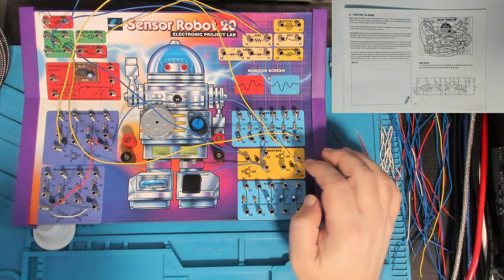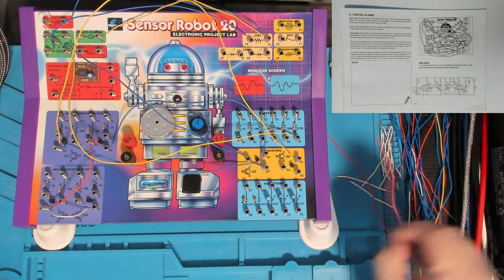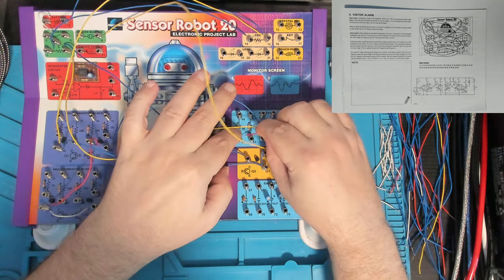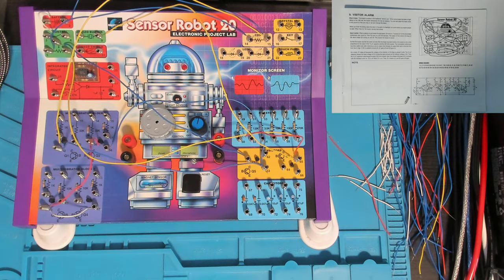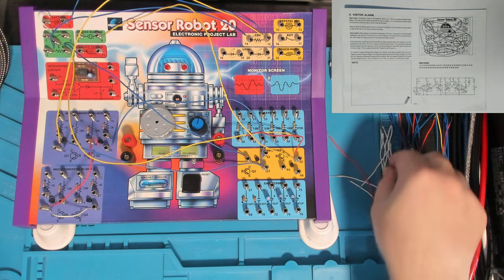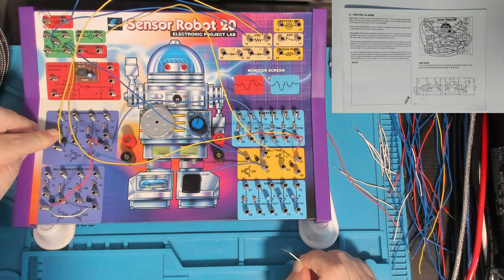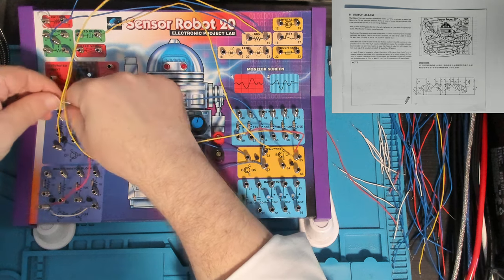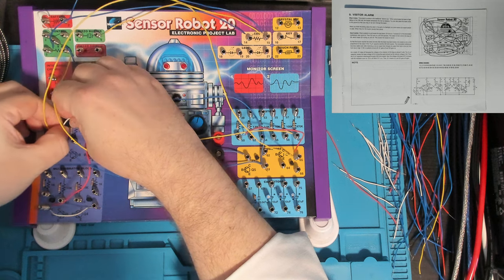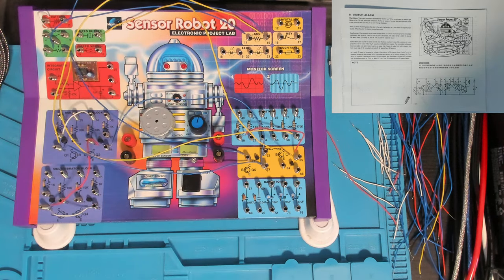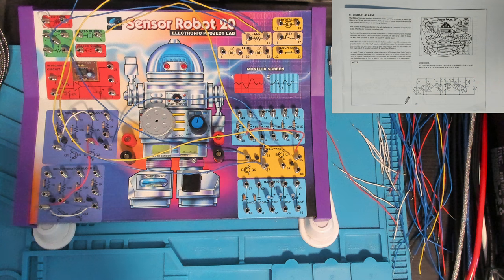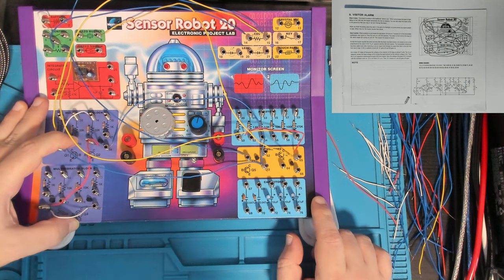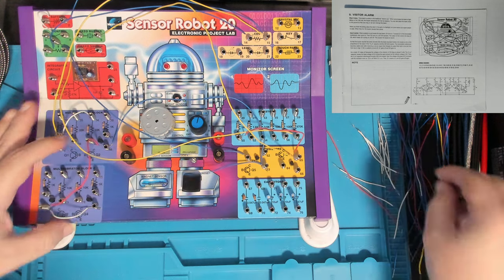Then we've got 65 to 50, just connecting that collector over to the 1k resistor in the resistor block. And then 31 to 34. 34 is the 33k ohm resistor connected through to the base of Q2, and 31 is the collector of Q1.